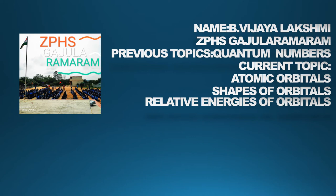Good morning children. In the previous class we discussed principal quantum number, angular momentum quantum number, magnetic quantum number, and spin quantum number. In the present class we are going to discuss atomic orbitals, shapes of atomic orbitals, and relative energies of the atomic orbitals.